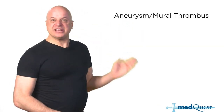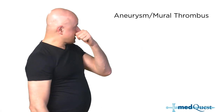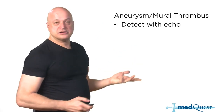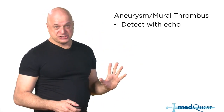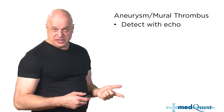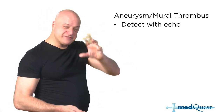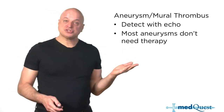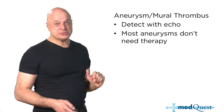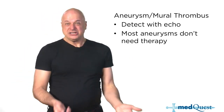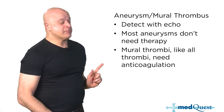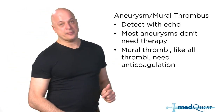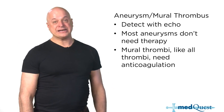Aneurysms form because scarred necrotic tissue is weaker and pops out. You can't tell from an EKG that there's an aneurysm — only an echocardiogram shows outpocketing. Most aneurysms don't need treatment unless they look about to rupture, because treatment is surgical resection. The problem with aneurysms is they create stasis, stasis creates thrombi, and thrombi create the need for anticoagulation.